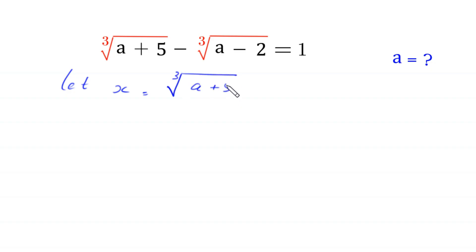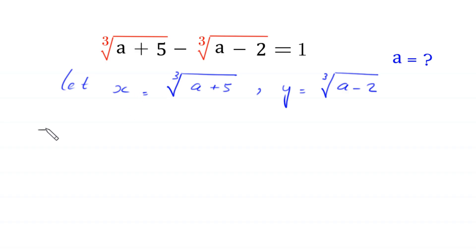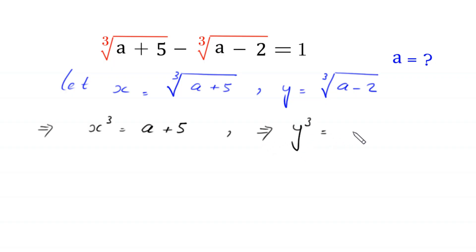a+5, and y is equal to the cube root of (a-2). If we take the cube of both sides of the first equation, this implies x³ = a+5. If we take the cube of both sides of the second equation, this implies y³ = a-2. Substituting x and y into the original equation gives us x - y = 1.